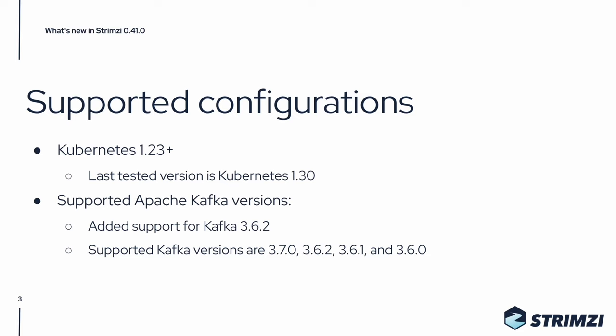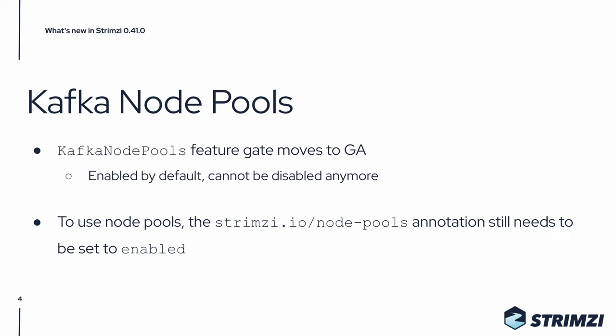There are two feature gates graduating in this release. The first one is the Kafka Node Pools feature gate. It will now be enabled by default and it will not be possible to disable it anymore. But keep in mind that that doesn't mean that Kafka Node Pools resources will always be used. If you want to use them, you have to enable them using the strimzi.io NodePools annotation, setting it to enabled on the Kafka custom resources.